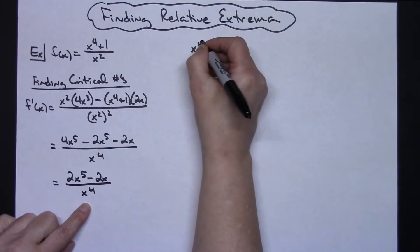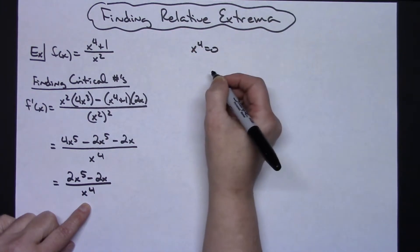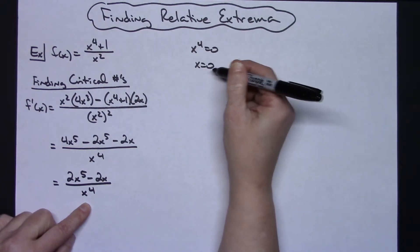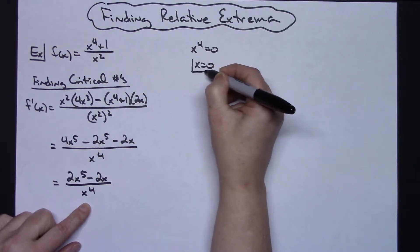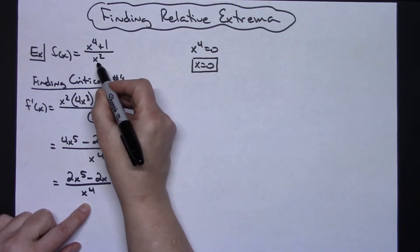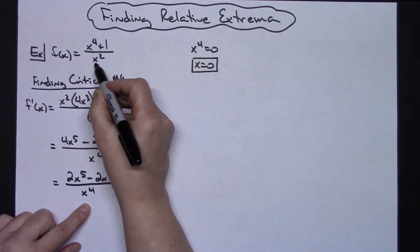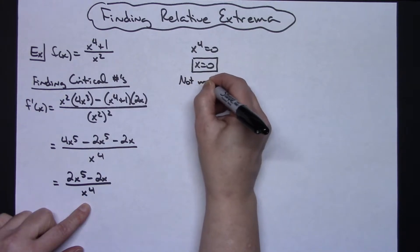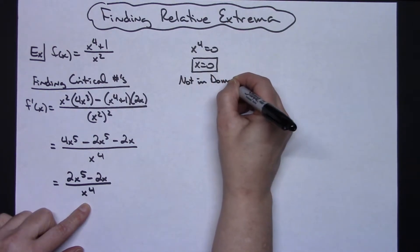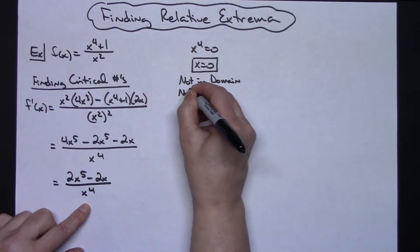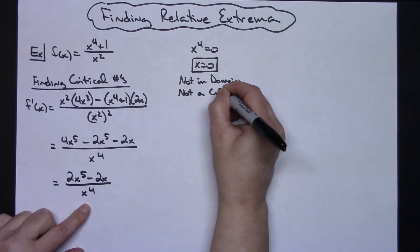If I take the denominator and set that equal to zero: x to the fourth equals zero. Taking the fourth root of both sides I get x equals zero. Now this is that special case I wanted to address — zero is not in the domain of this function because I've got an x squared on the bottom, so x cannot be zero.